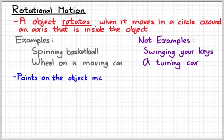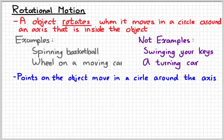So if something is rotating, that means that the points that are on the object are moving in a circle around the axis. And what we want to be able to do is describe the motion of such a point and describe the motion of the object as a whole. So how do we do that? How do we describe rotational motion?